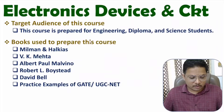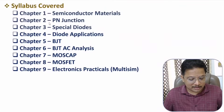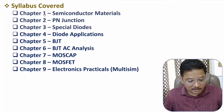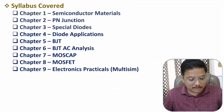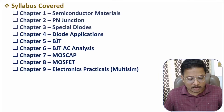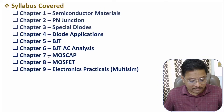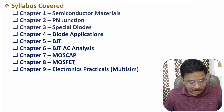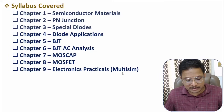If you see the syllabus, in total nine chapters are there. The first chapter is semiconductor materials, second is PN junction, third is special diodes, fourth is diode applications, fifth is BJT, sixth is BJT AC analysis, seventh is MOSCAP, eighth is MOSFET, and the last chapter is based on electronics experiments using Multisim software.